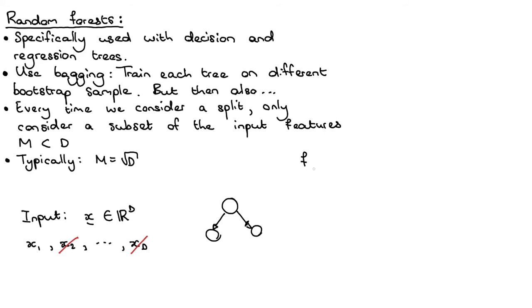So if we have a regression setting, then the final output of my model will be the sum from the B trees, exactly like we do with bagging.